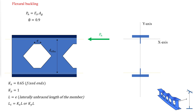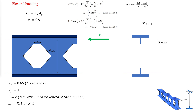The critical stress FcR is determined as follows, where LC over R is the greatest of KxL over Rx and KyL over Ry. If the tees include slender compression elements, AISC specification section E7 is used to calculate FcR. The elastic stress Fe is calculated using the Euler buckling equation.